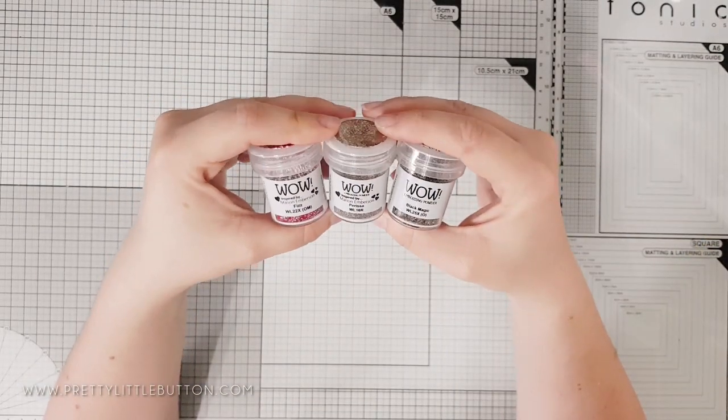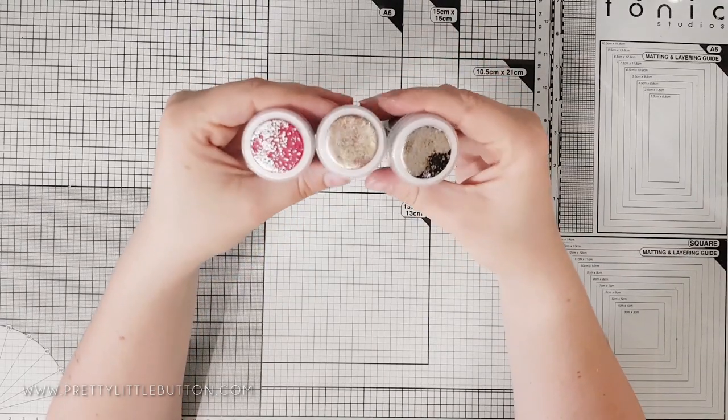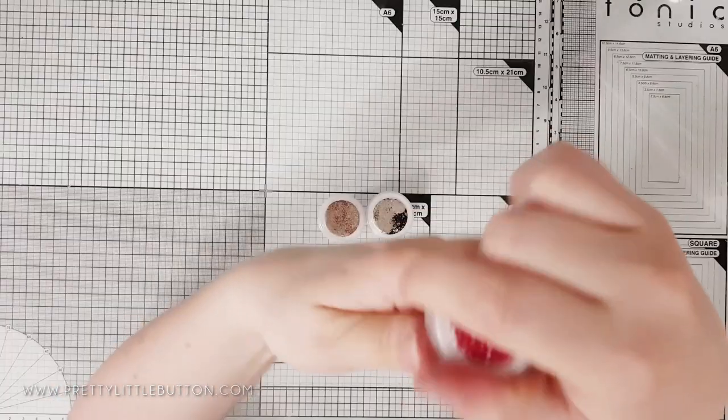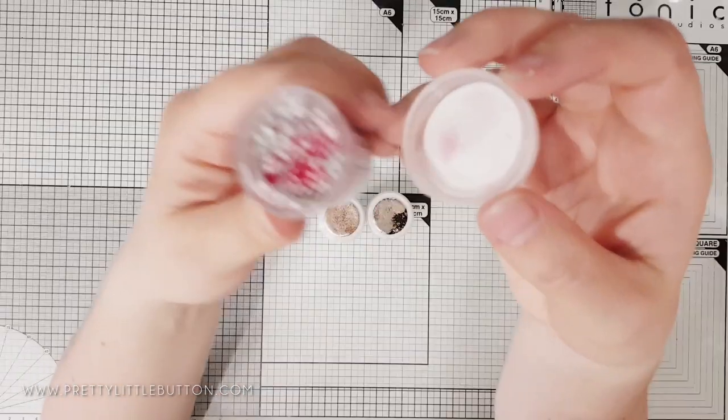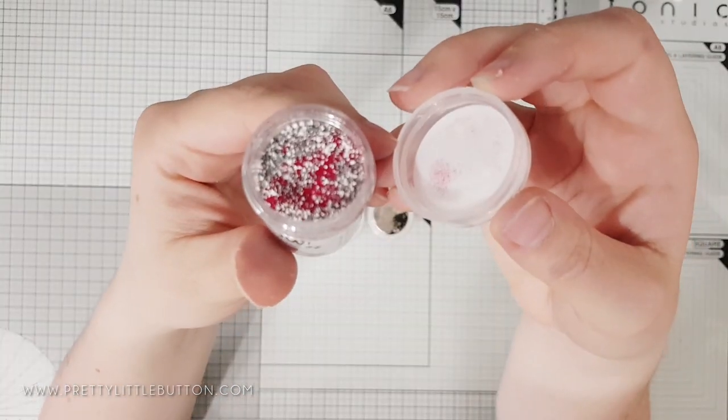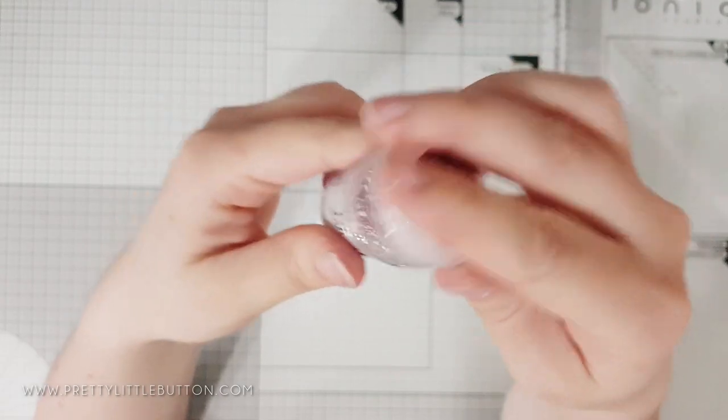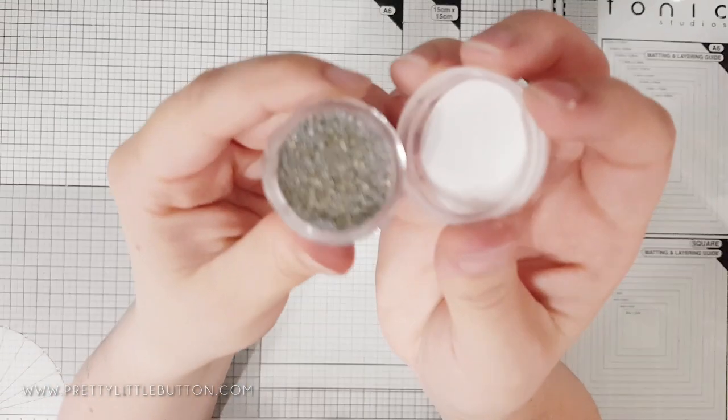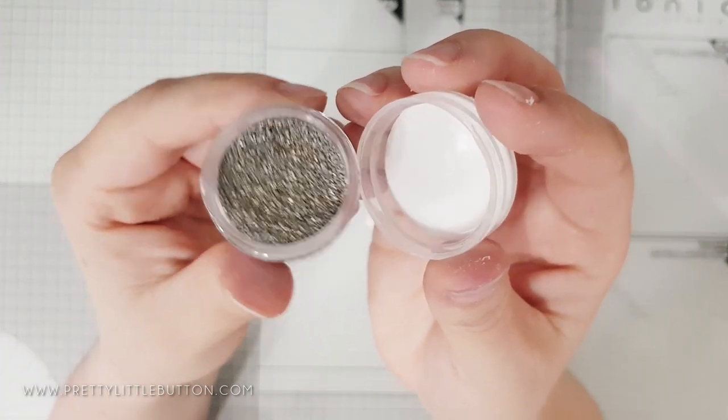In today's video I'm using three different color blend powders: Black Magic, Parisa, and Fizz from the Confetti Trio. These powders contain a mixture of colors but also a mixture of different size embossing powders, so this can be a mixture of fine or normal embossing powders with more chunky powders in the mix as well.